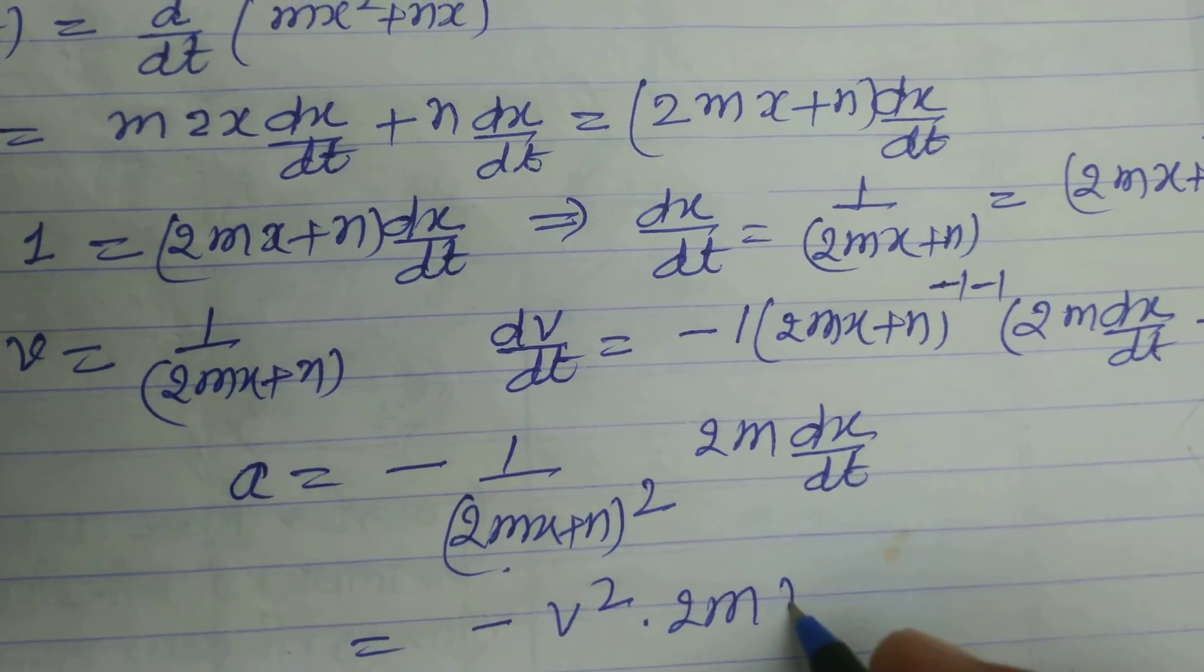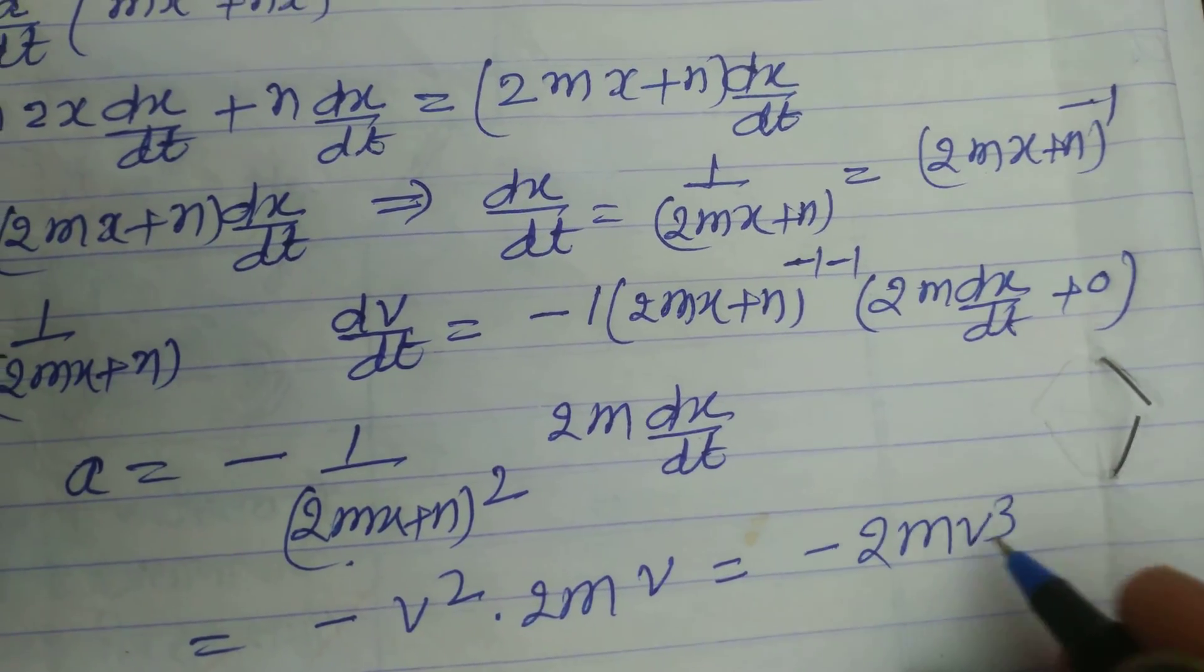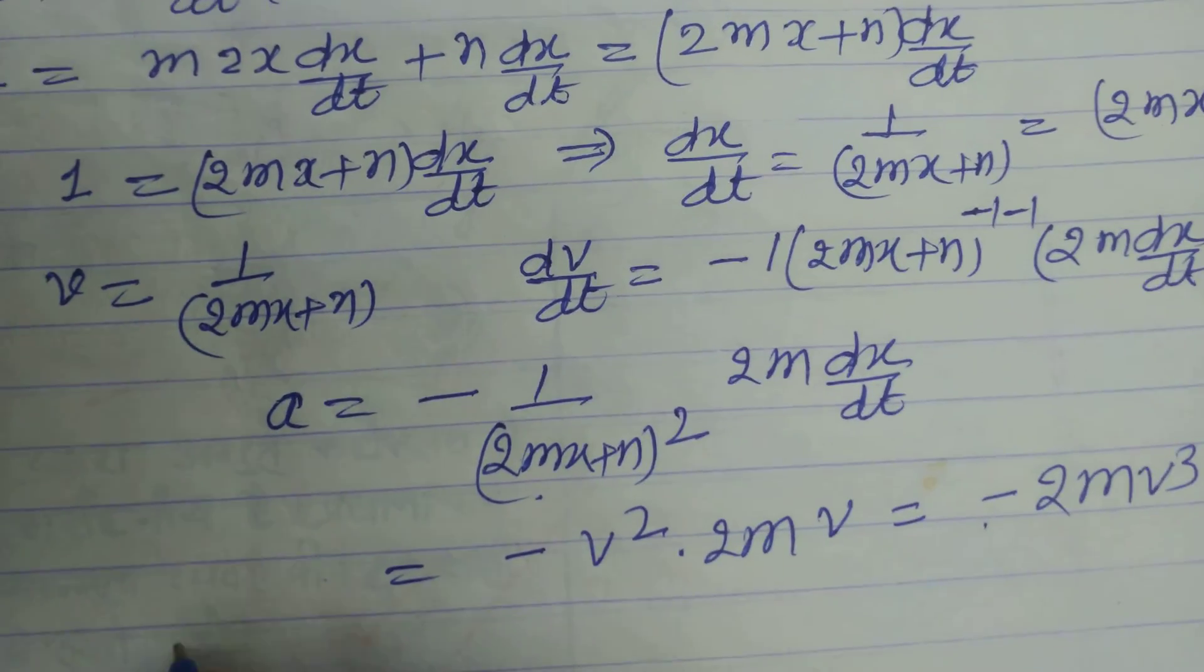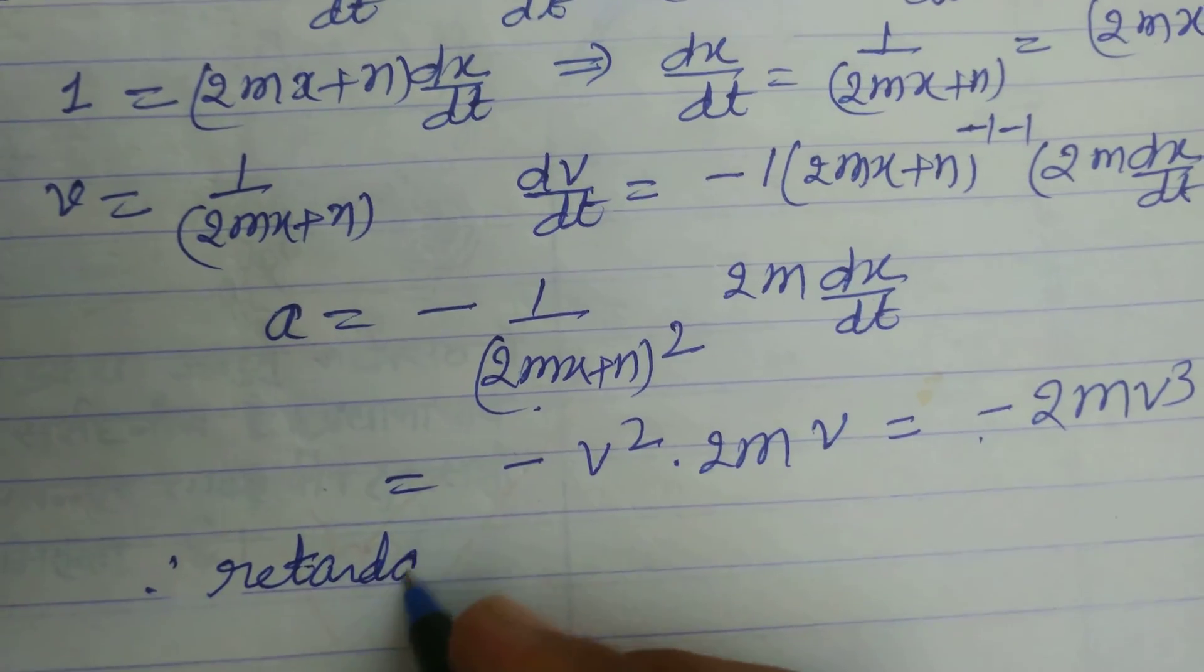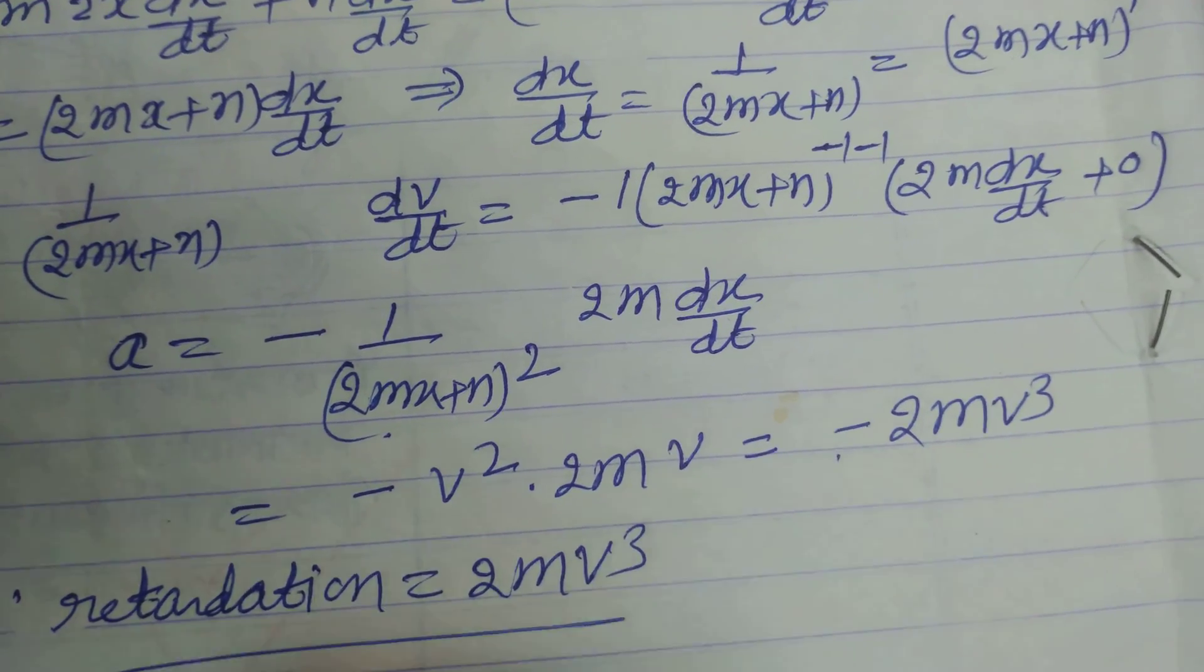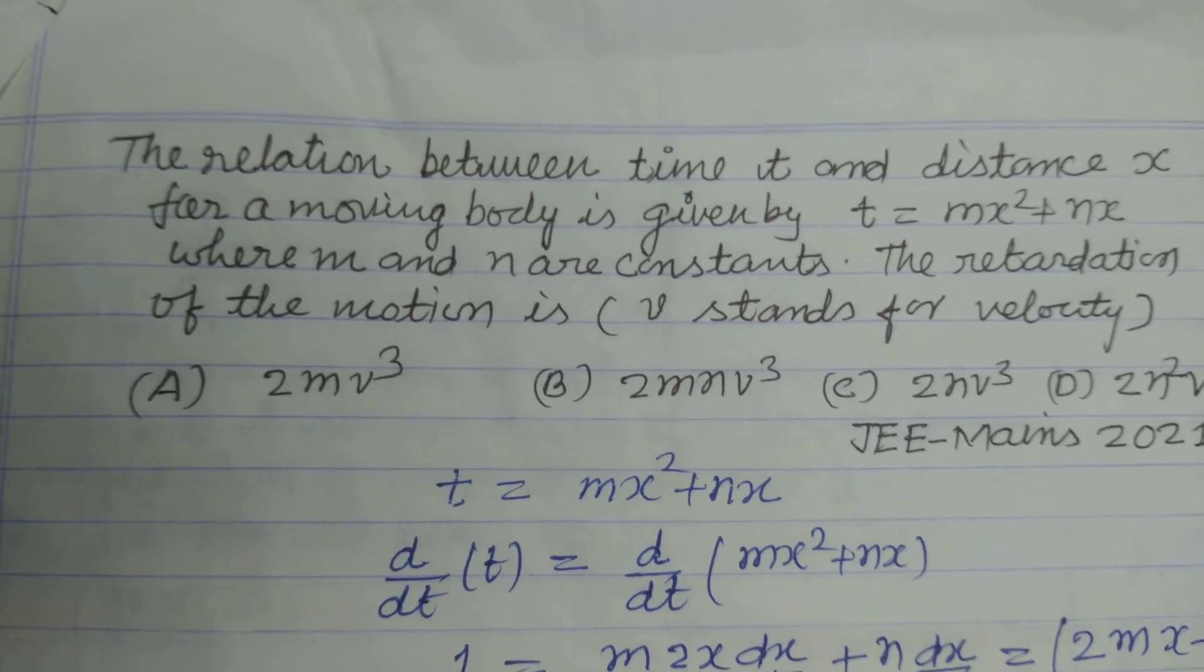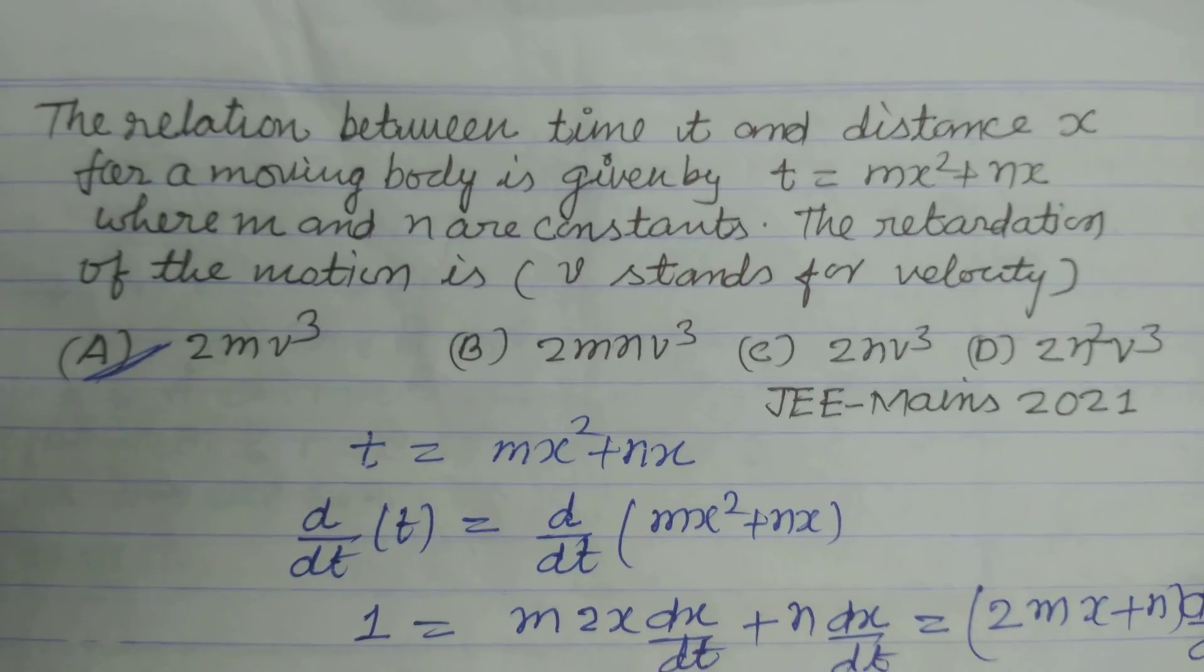We get -2m/(2mx + n)² times v² = -2mv³. This is negative, so it represents retardation. Therefore, retardation = 2mv³. The answer to this question is found in option A: 2mv³.